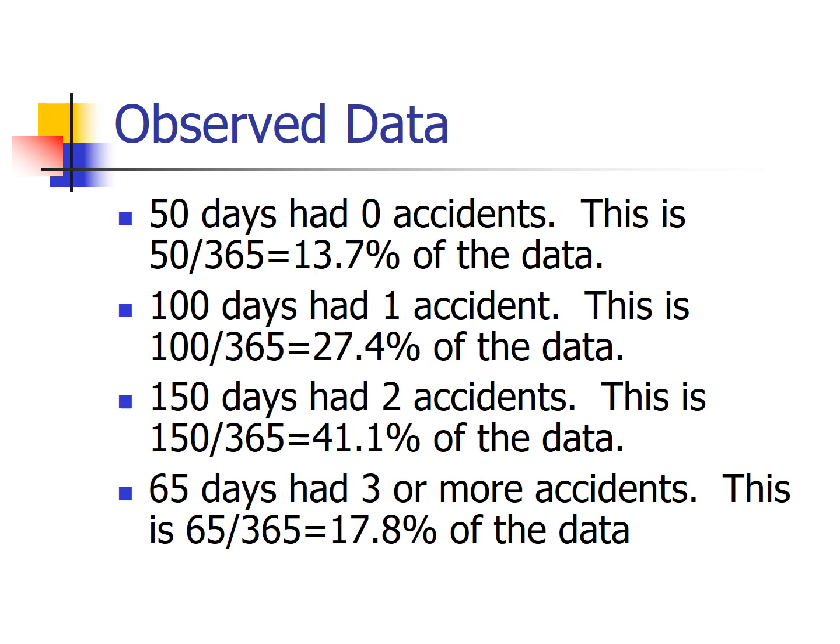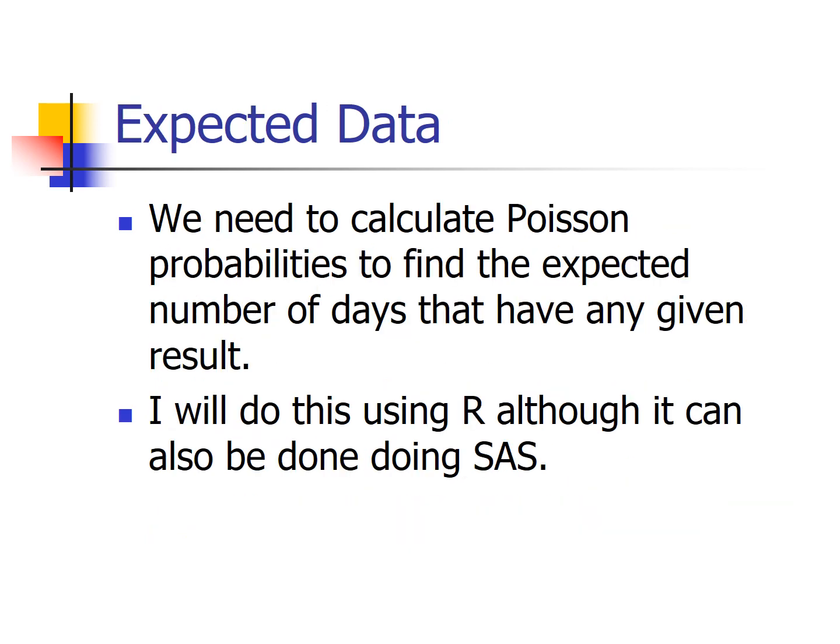We can calculate these probabilities in R or SAS. Using the dpois function in R — the Poisson probability density function — with lambda 1.7: the probability of zero accidents is 18%, one accident is 31%, two accidents is 26%. To find the probability of three or more, since all probabilities sum to one, we compute one minus P(X=0) minus P(X=1) minus P(X=2).